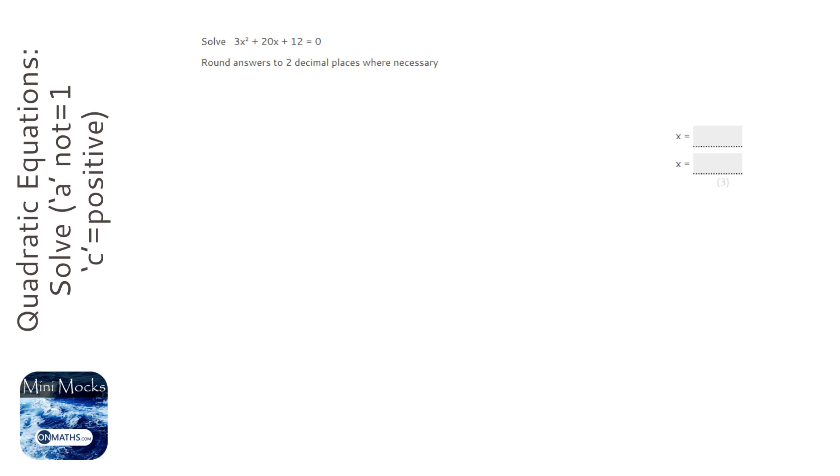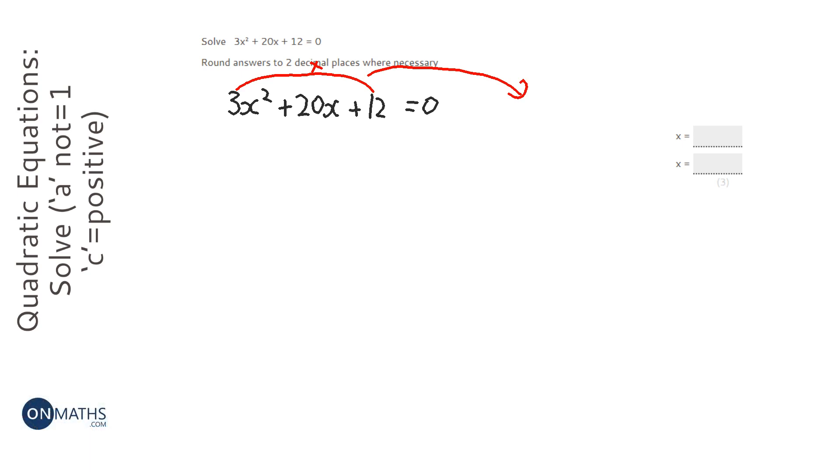So, first thing I need to do is factorize it. I'm just going to write out the question again so I can show it a little bit easier. Now, the method to factorize it, there are different methods out there, but the method I use is I times these together, and I'm going to put my answer over here. So, 3 times 12 is going to be 36. And what I'm going to do is write factor pairs of 36, and the factors I'm looking for will add together to make the 20 here. So, I want to make that 20.